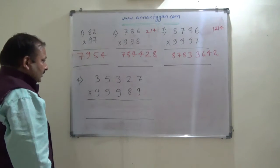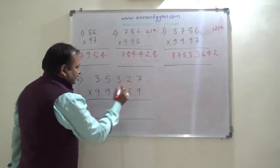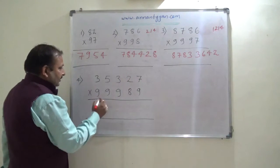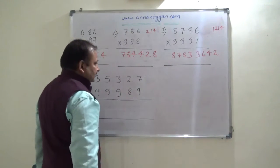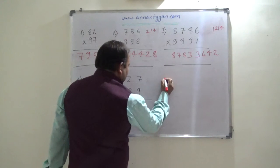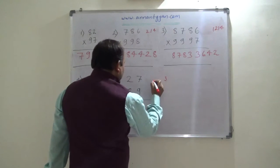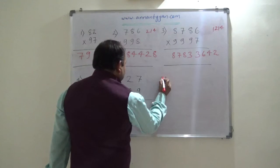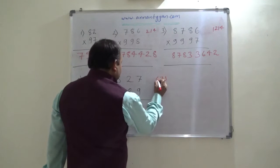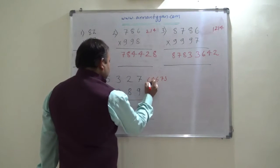The next one is 35327 into 99989. The answer is 35323 and from the right hand side it is 77646.